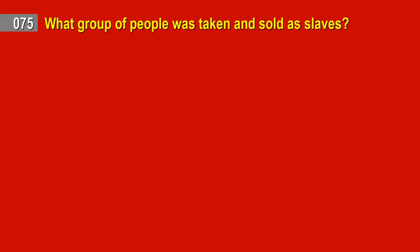Question 75. What group of people was taken and sold as slaves? Answer: People from Africa.